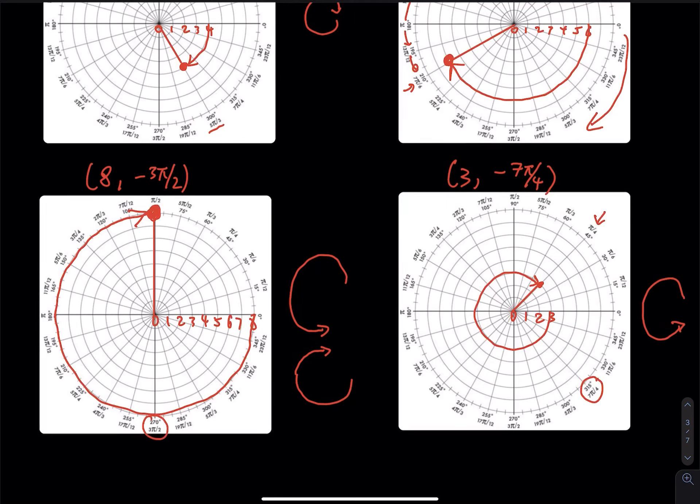In this video, I kept r positive and explained both positive and negative angles. In the next video, I will also cover positive and negative angles, but I'll explain what happens when the directed distance r is negative. If you found this instruction helpful, please like, subscribe, and share. I appreciate your help — signing out for now, see you in the next one.